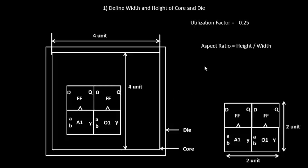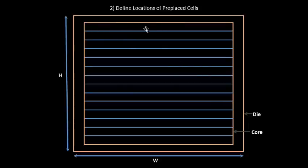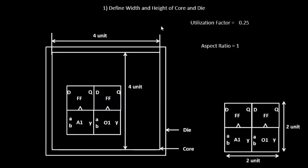Now let's calculate the aspect ratio. It's height divided by width — height is 4 units, width is 4 units, so the aspect ratio is 1. As discussed in previous videos, wherever you see an aspect ratio of 1, it is a square chip. This is how you determine the width and height of core and die.